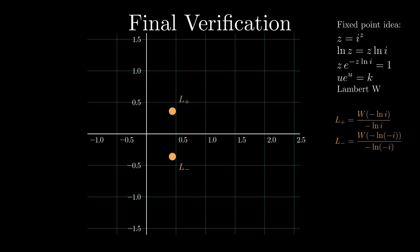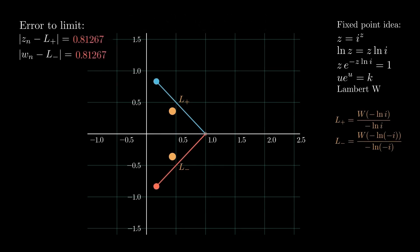Now we verify the result. Starting from 1, we repeatedly apply the transformations z equals i to the power z and z equals minus i to the power z. Each iteration moves closer to a fixed point. The error shrinks step-by-step, confirming convergence.